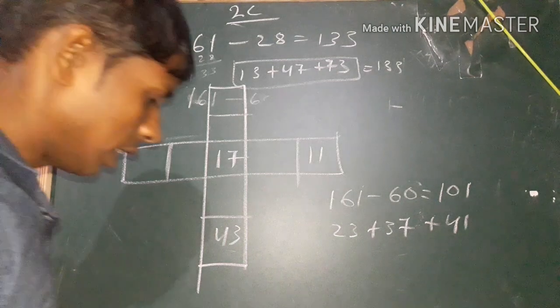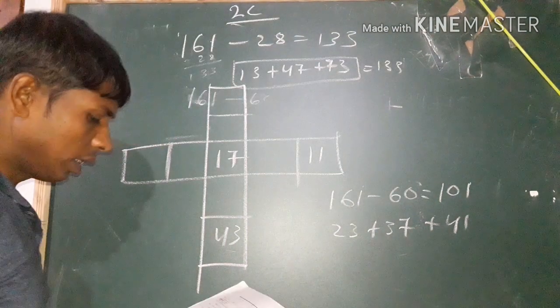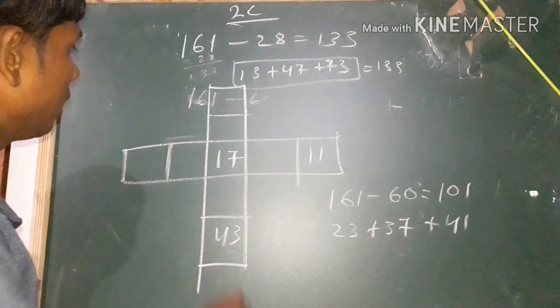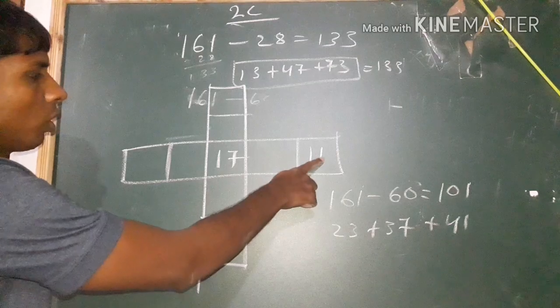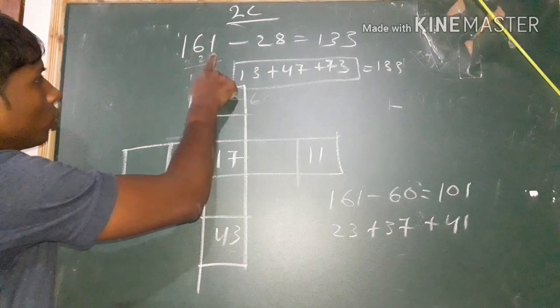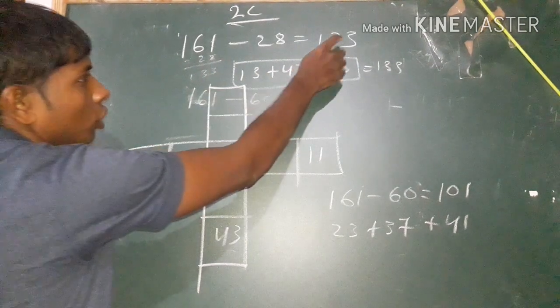The second two is another one, so the second two is another one. This is 138, so the third one is 139.